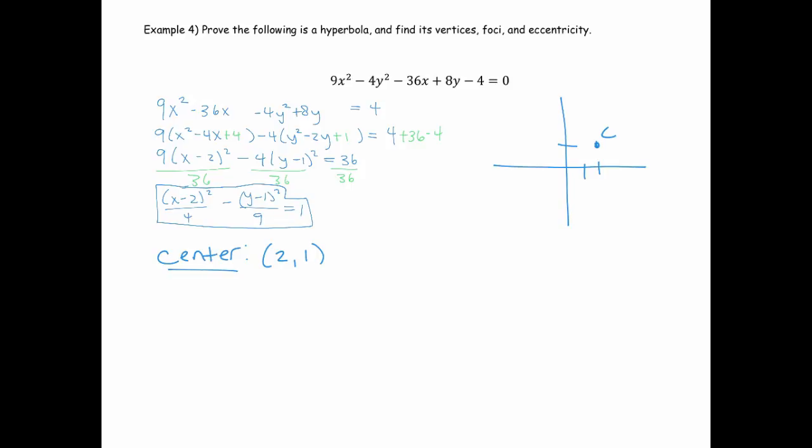Now to find the vertices, let's remember that this 4 here is a squared. Which means that a is 2. And it's under the x squared term. That comes first. So that means I'm going to move horizontally a distance of 2 away from the center to get either vertex. So there are my two vertices. So the coordinates of those would be 0, 1 and 4, 1.